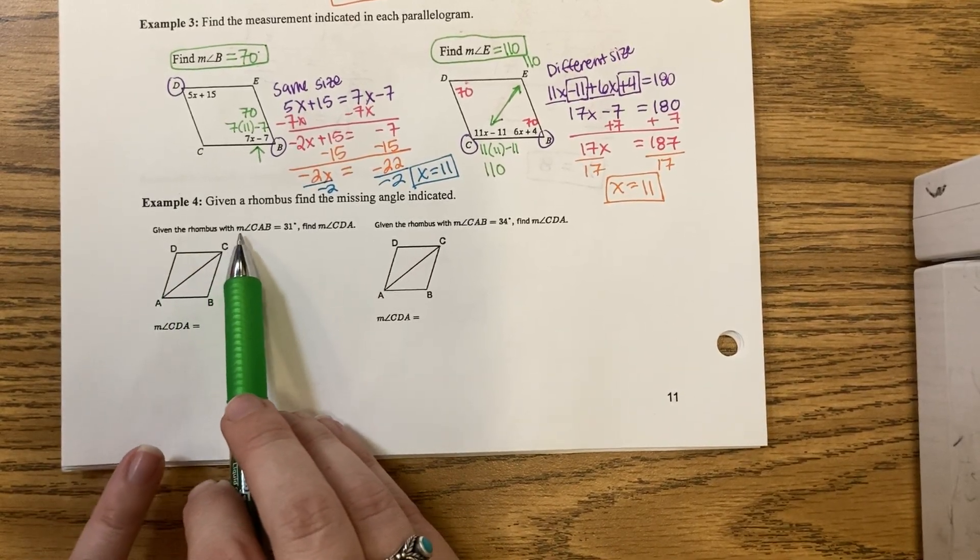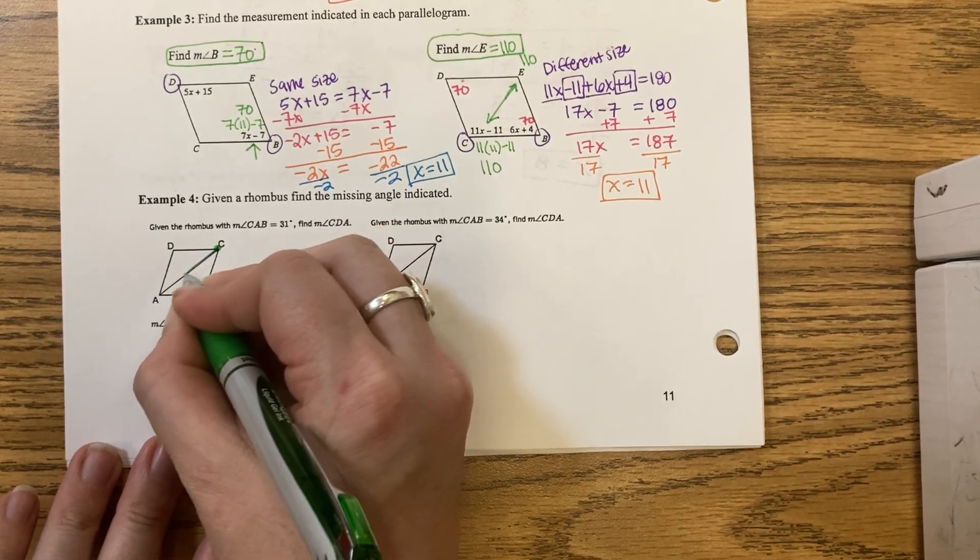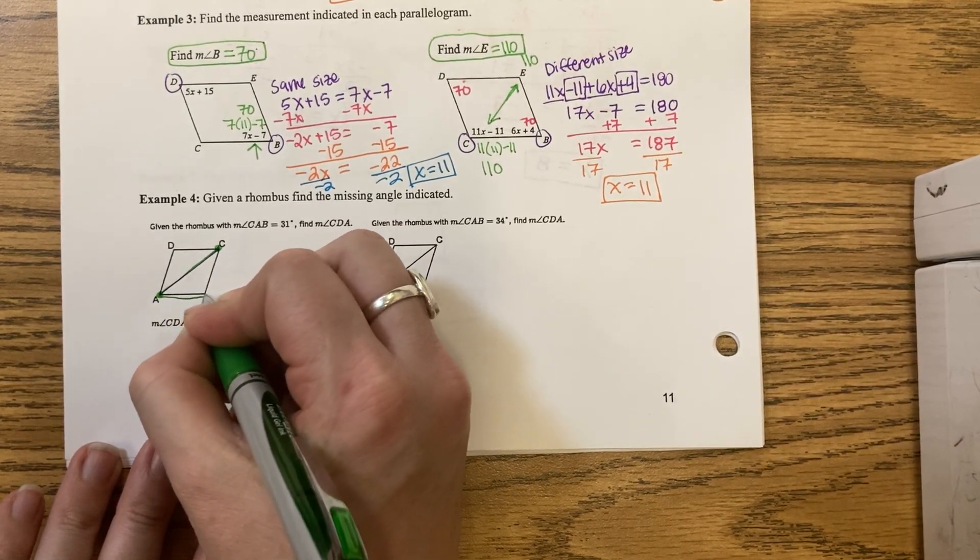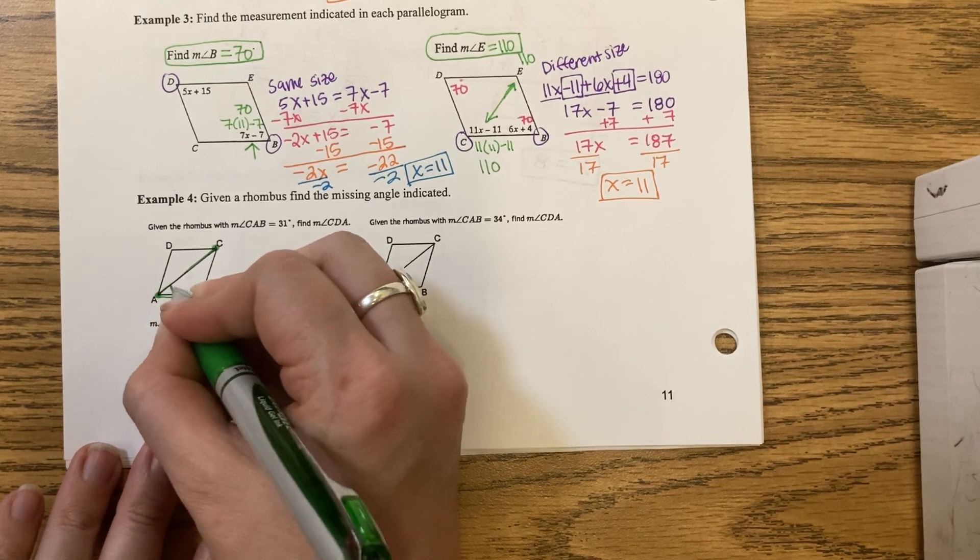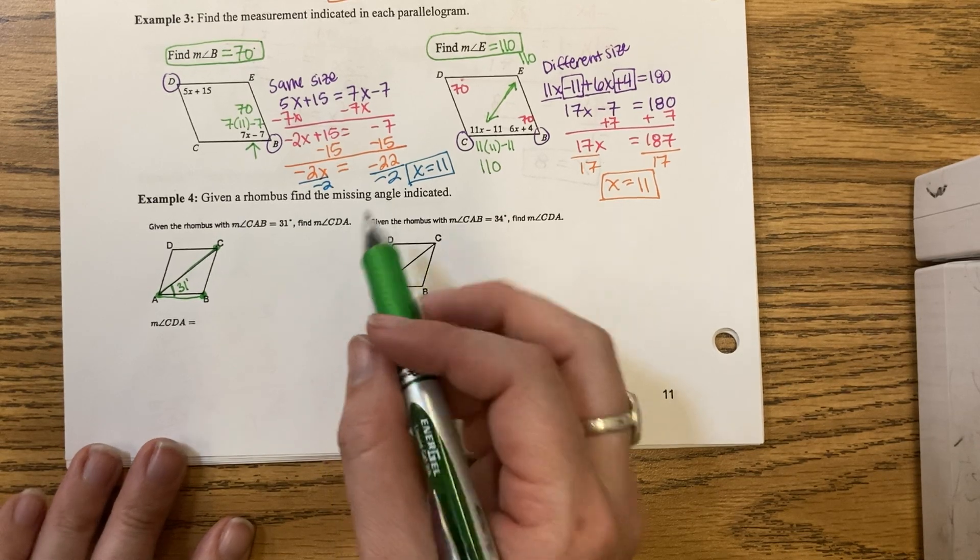So what if we are given a rhombus? Given the rhombus with measurement CAB. Angle CAB equals 31. Find the measure of angle CDA.